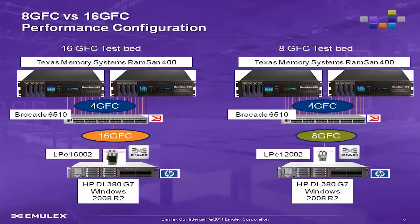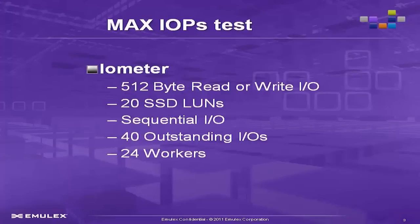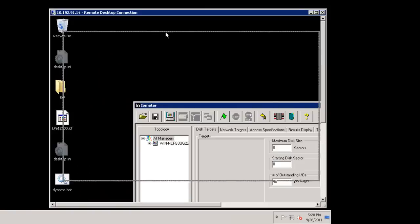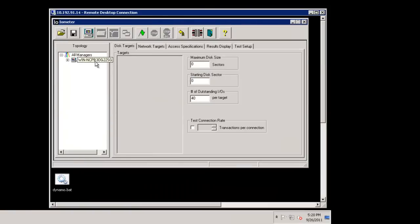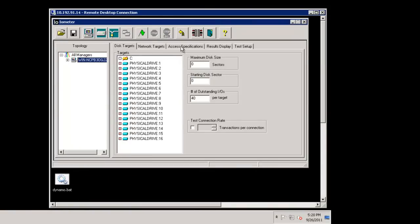This basic configuration has all the same components except the HBAs are different and running at different link rates. You can see the HBA is going to communicate to a 16 gig switch, which on the back end has high-speed RAM SAN type storage devices. The first test is going to be the max IOPS test — a simple test using 512 byte reads or writes run sequentially to 20 LUNs using 40 outstanding IOs.